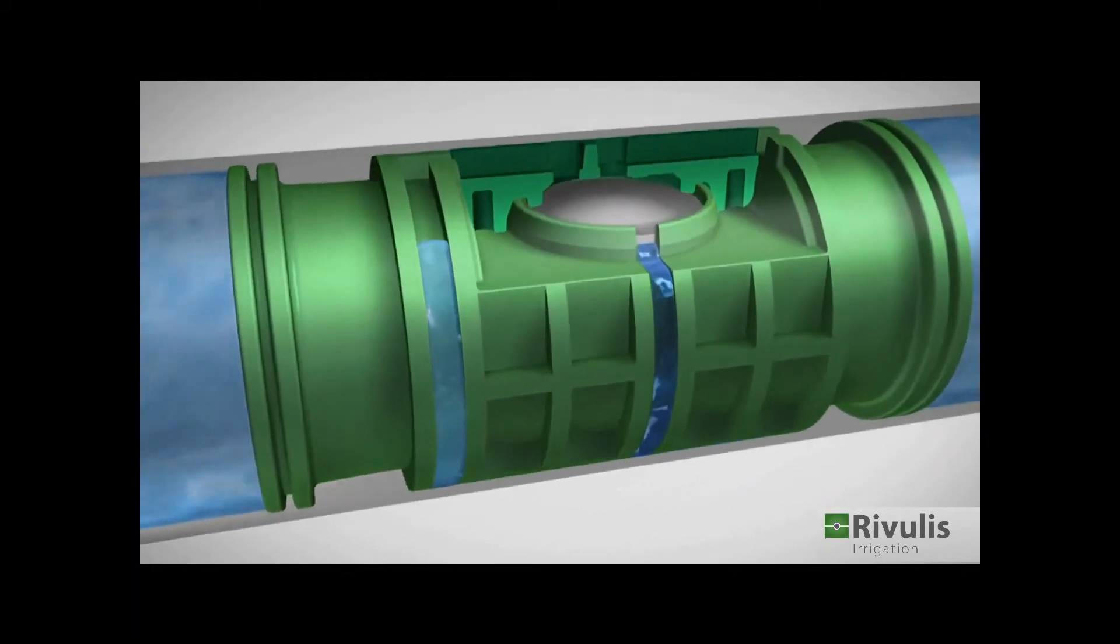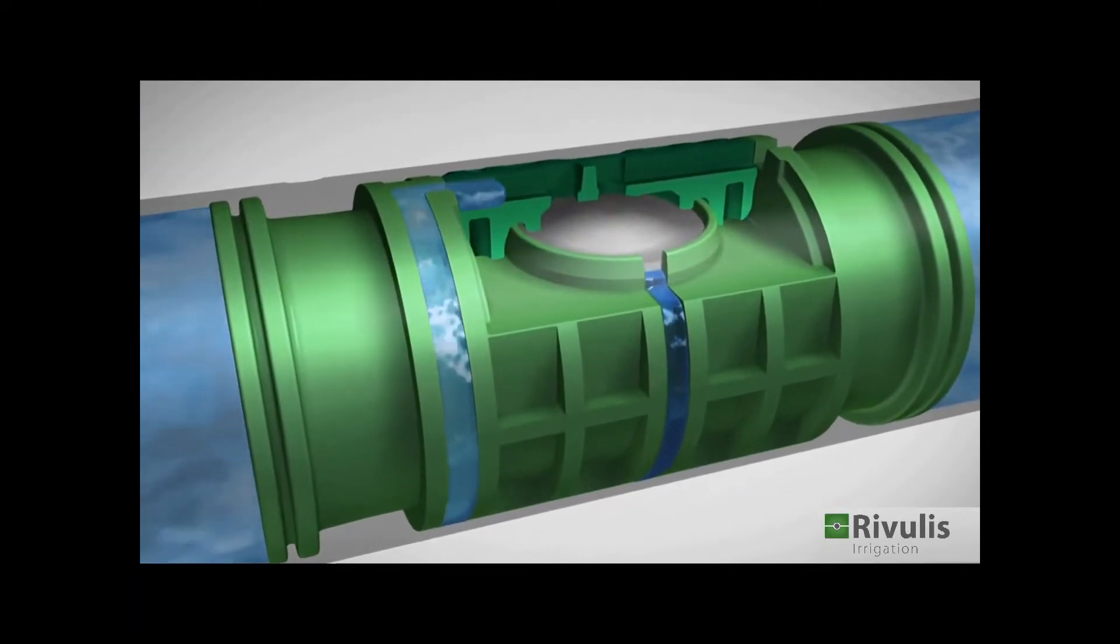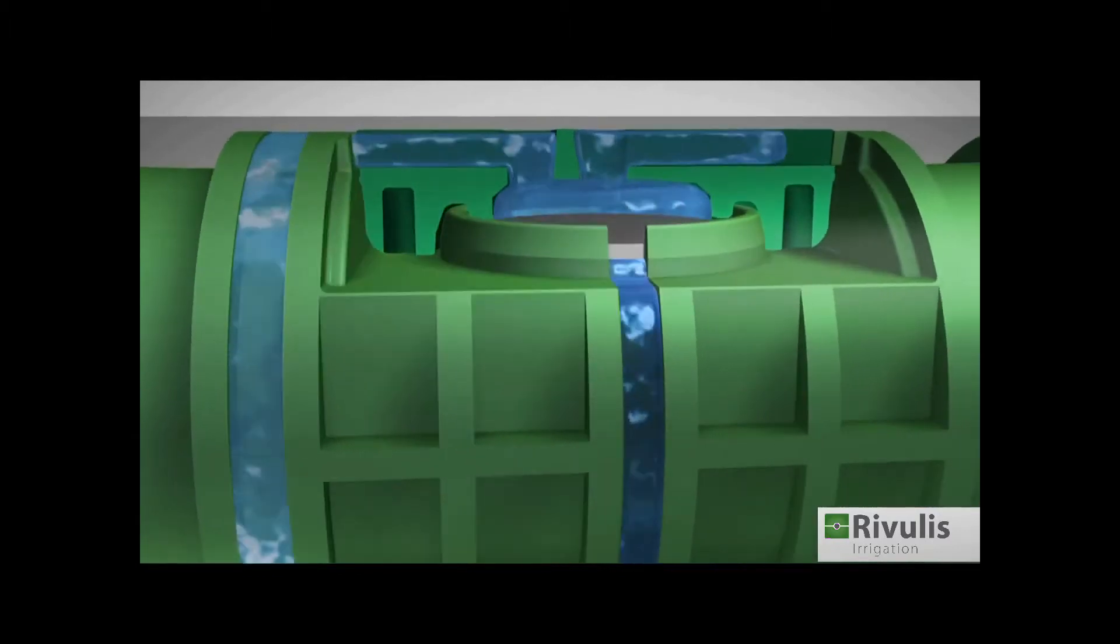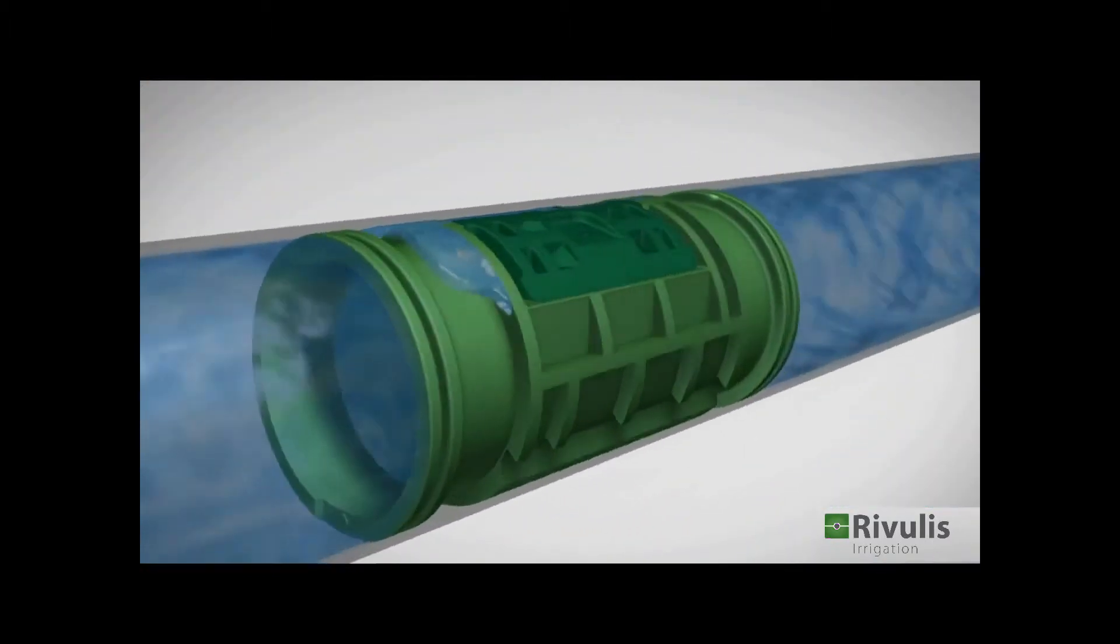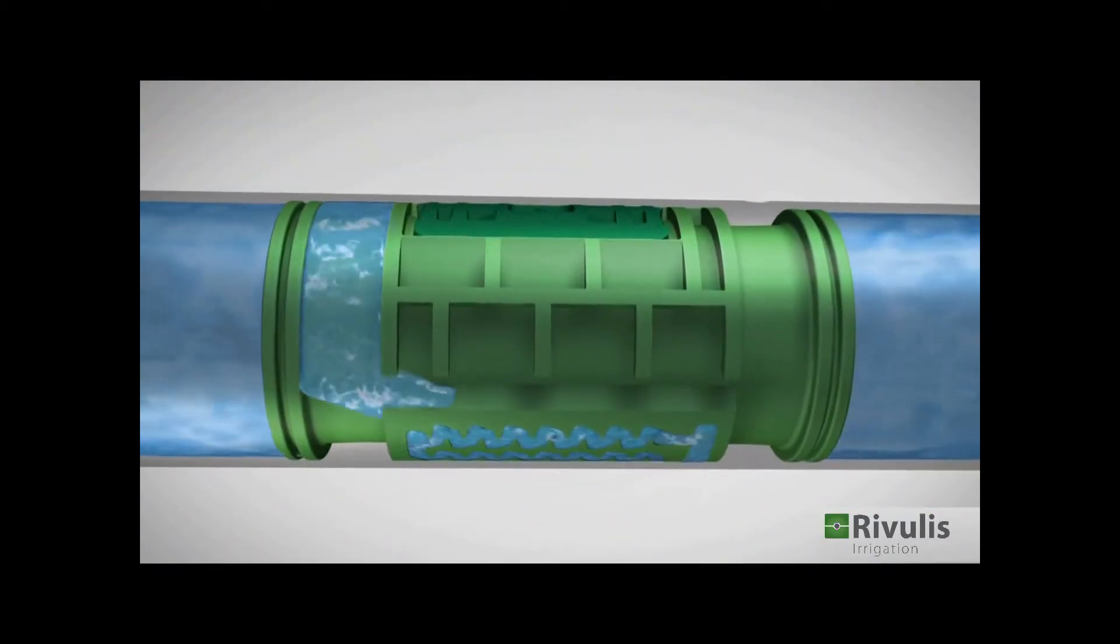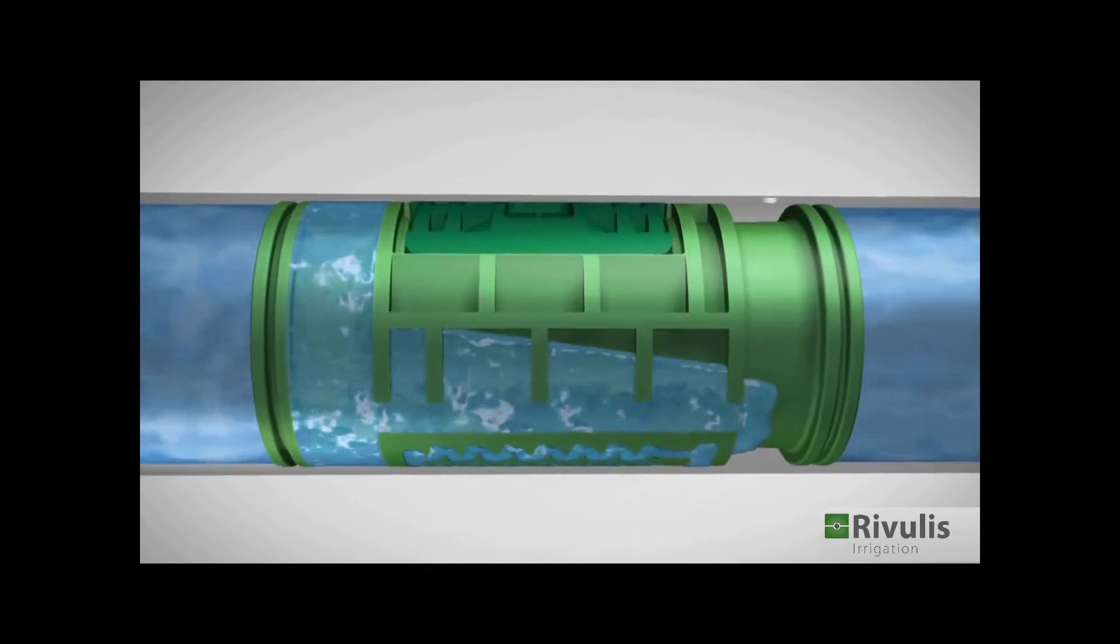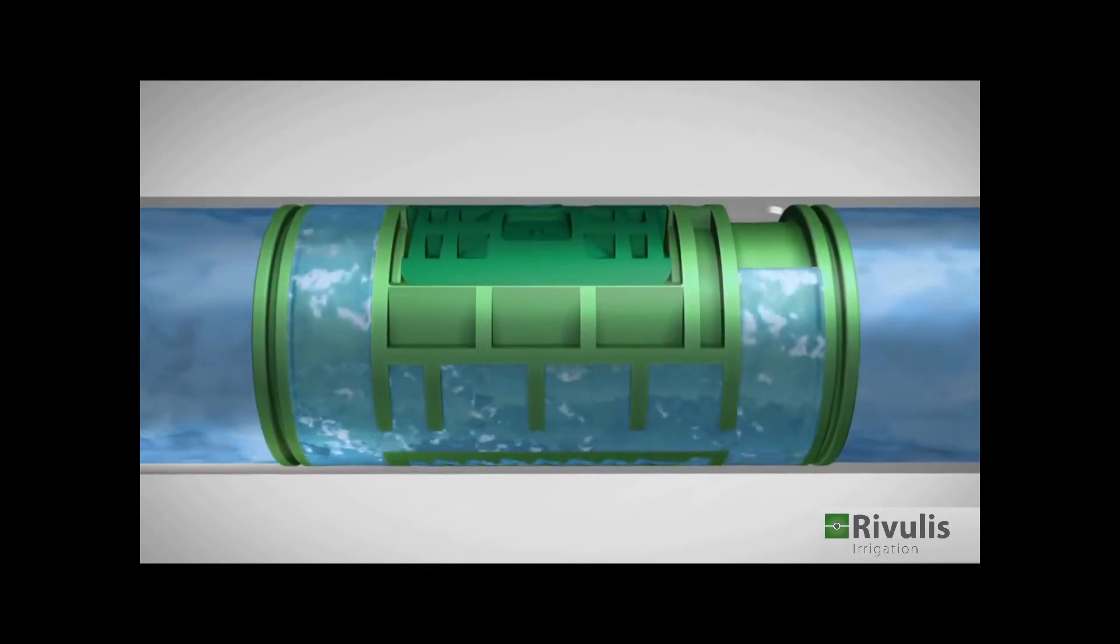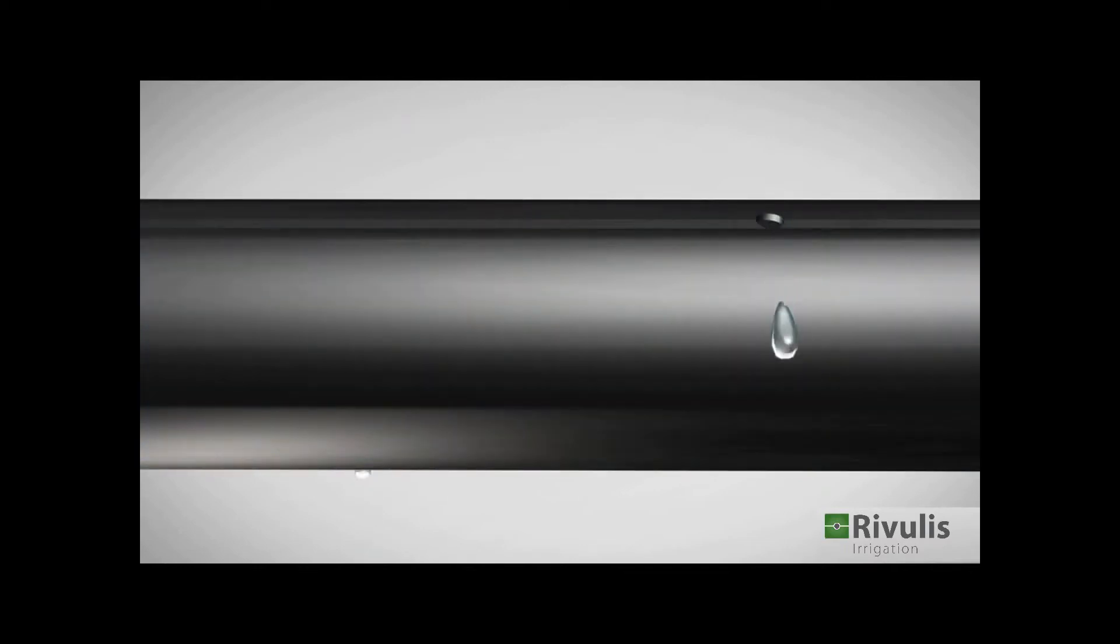The water reaching the regulating chamber exerts less pressure on the top part of the diaphragm and regulates the dripper's flow rate. The water continues to the outlet chambers and from there to the ground through two drip holes.